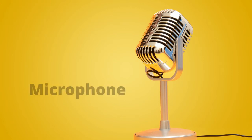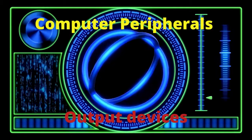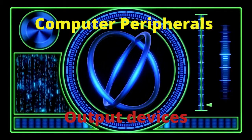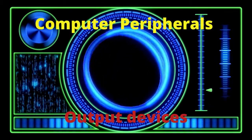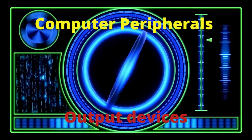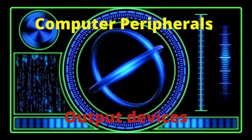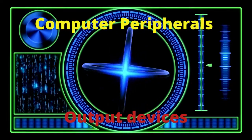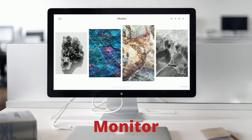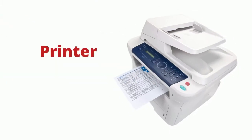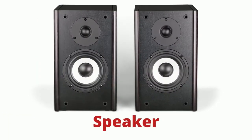Output devices receive data from the computer — after you tell the computer what to do, the computer gives you the output through output devices. Examples include the monitor — whenever you type, you see it on the screen; the printer — when you type, you print it out; the speaker; and the headphone, which we use to listen to music.